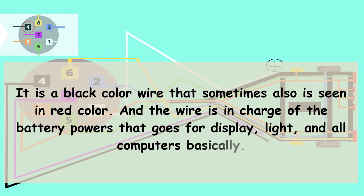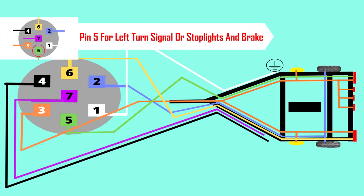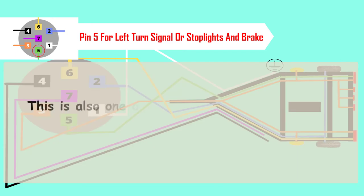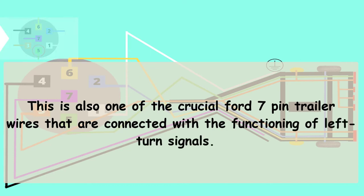Pin 5 is for left turn signal or stop lights and brake. This is also one of the crucial Ford 7 pin trailer wires that are connected with the functioning of left turn signals.